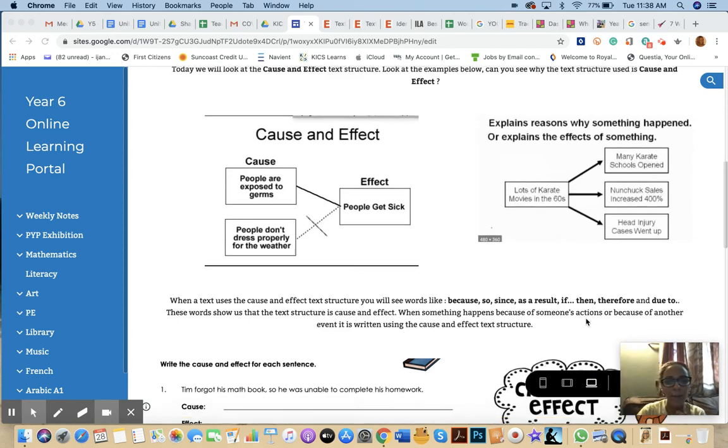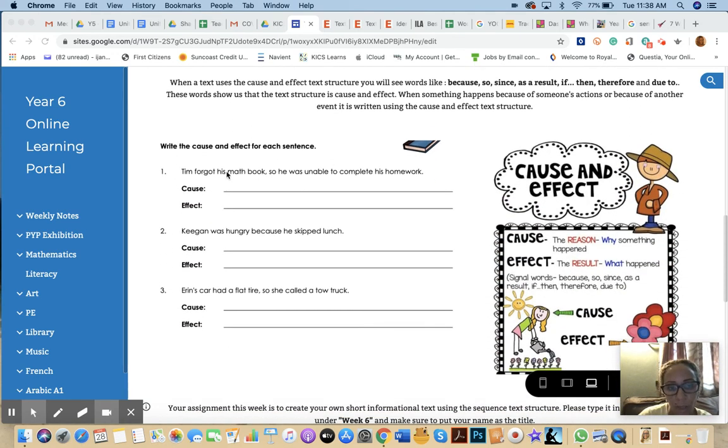We have three examples here. For example, number one is: Tim forgot his math book, so he was unable to complete his homework. I want you to look at these three examples and write what you think the cause and effect is for each of them.